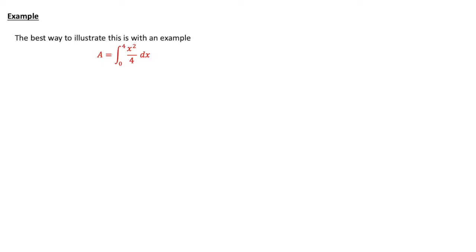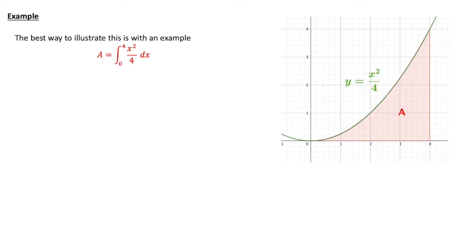We're going to have a look at the area between 0 and 4 of x-squared over 4 dx. That's the familiar sort of x-squared curve, it's squashed down a bit by dividing it by 4, and first of all we need to find the antiderivative or integral of x-squared over 4.